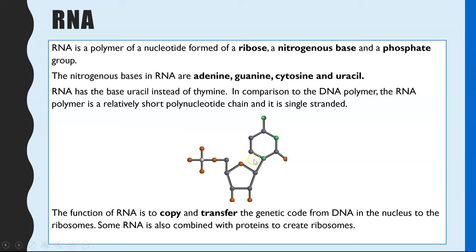RNA is very similar in structure to DNA, the difference being that we have ribose instead of deoxyribose, and we have uracil instead of thymine. The function of RNA — there are multiple functions because there are three types of RNA, which we'll look at — but in general it is to copy and transfer genetic information.